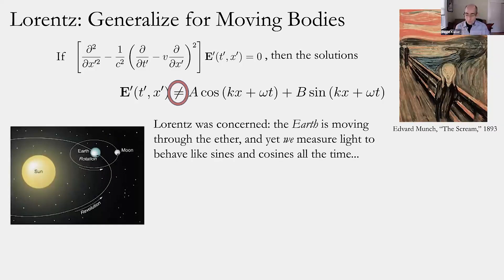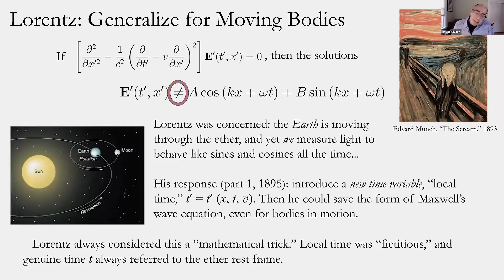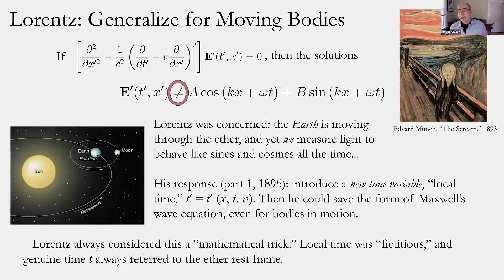Lorentz came up with one part of what turns out to have been a two-part response. His first response was really kind of mathematical. He was, after all, a remarkably accomplished mathematical physicist. He published this first part in the 1890s. He just introduces a new time variable — he calls it local time.